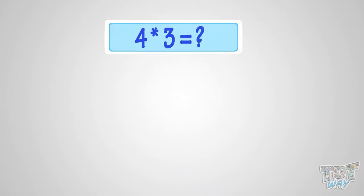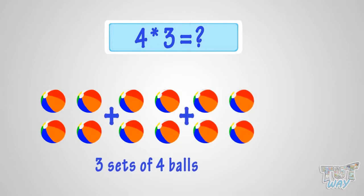What is four multiplied with three? It is the same as three sets of four balls. Four plus four plus four equals twelve. So, it is twelve balls.